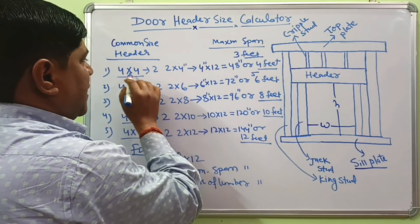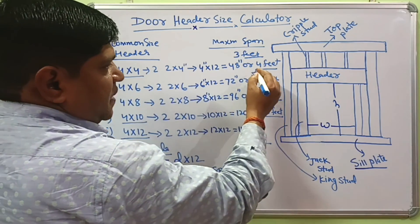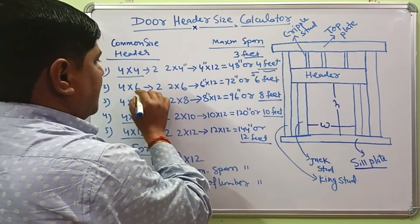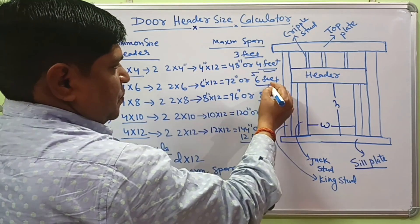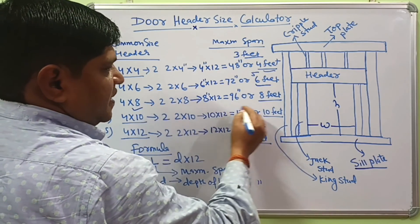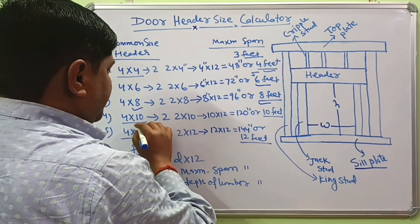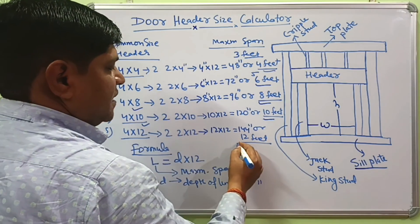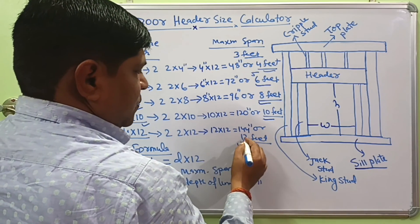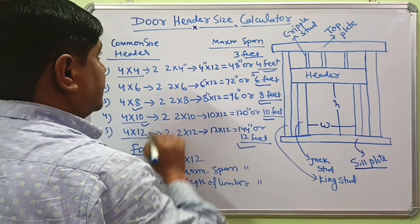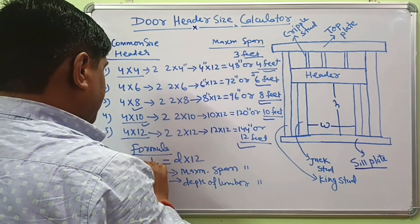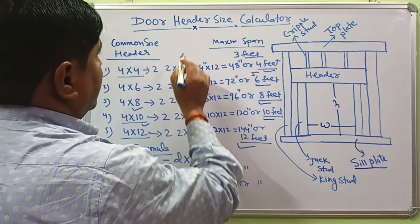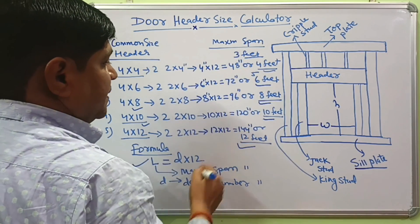It means 4 by 4 header size can span up to 4 feet. 4 by 6 header size span up to 6 feet. 4 by 8 header size span up to 8 feet. 4 by 10 header size span up to 10 feet. And 4 by 12 header size maximum span up to 12 feet. And this header size calculator is going to determine correct header size for different span.